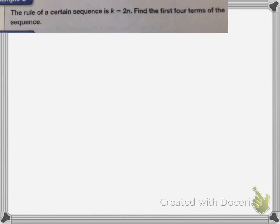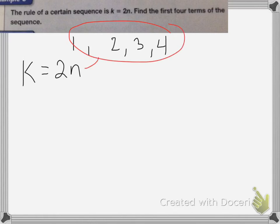With this last one, it tells me the rule. So the rule is k = 2n. And I want to find the first four terms of the sequence. So k is going to be my answer, equals 2n. So to find the first four terms, I'm going to put in the numbers 1, 2, 3, and 4 into my letter n. Okay, so my first one is going to be k = 2 × 1, which is equal to 2. That's my first term.